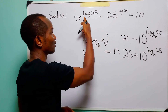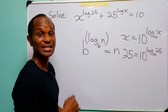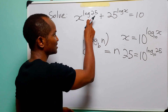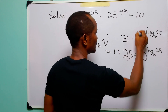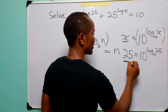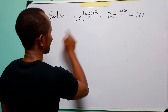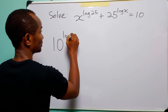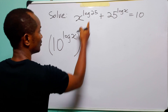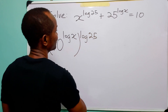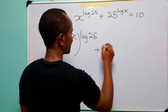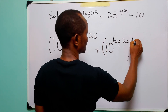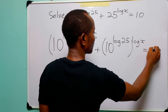Whenever you see the logarithm of a number written without the base being specified, it means we are working in common logarithm — that is logarithm to base 10. So to solve this equation, what we will do is replace x with this and replace 25 with this. We will write this equation as 10 to the power log x, raised to power log 25, plus 25 — which becomes 10 to the power log 25 — raised to power log x, is equal to 10.